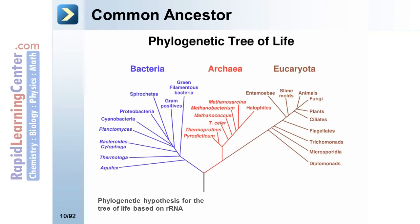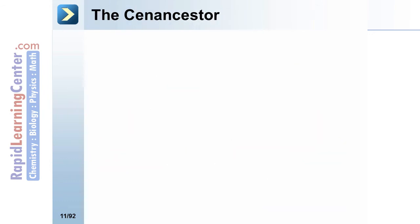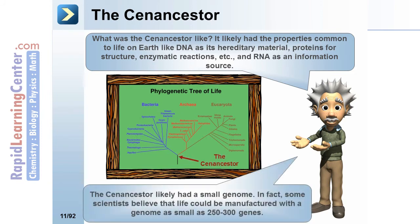The common ancestor is a phylogenetic hypothesis for the tree of life based on rRNA. The common ancestor to all life on Earth is also known as the cenancestor, progenot, and leuca. The cenancestor likely had properties common to life on Earth: DNA as its heritable material, proteins for structure and enzymatic reactions, and rRNA as an information source. Some scientists believe life could be manufactured with a genome as small as 250 to 300 genes.